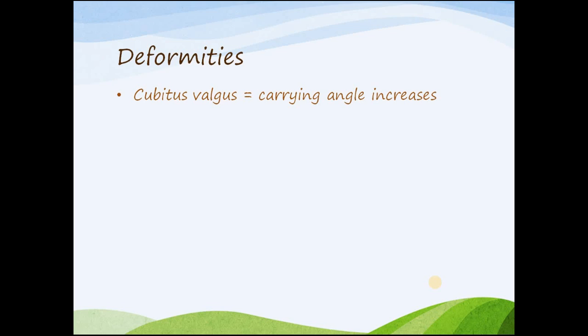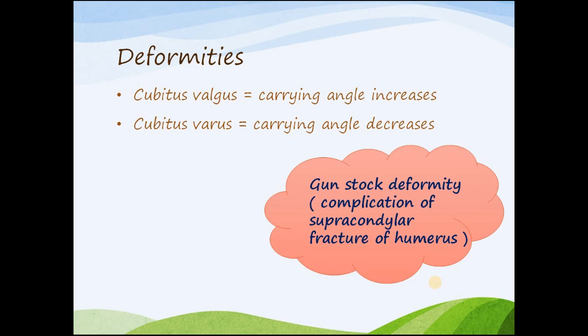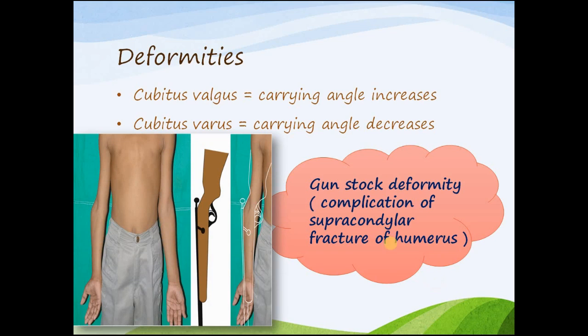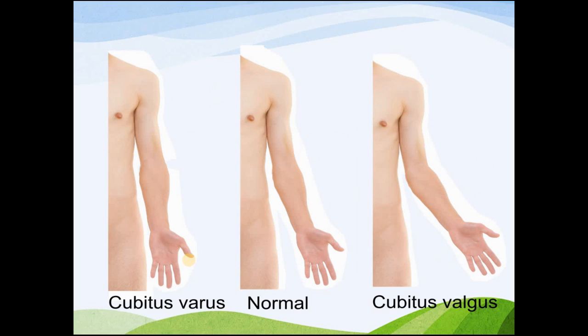There are two deformities related to the carrying angle: cubitus valgus and cubitus varus. In cubitus valgus the carrying angle increases, and in cubitus varus the carrying angle decreases. Cubitus varus is often termed the gunstock deformity because it is a complication of a supracondylar fracture of the humerus, as seen in the picture.